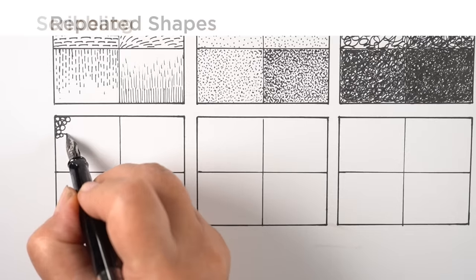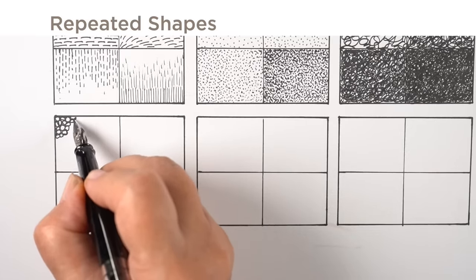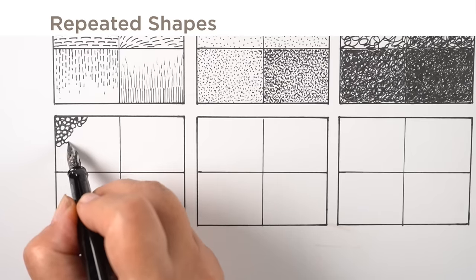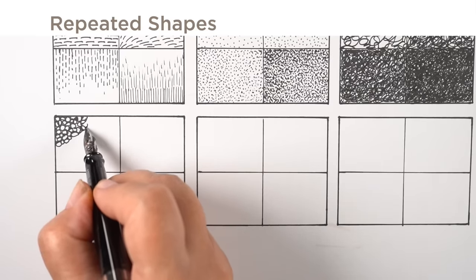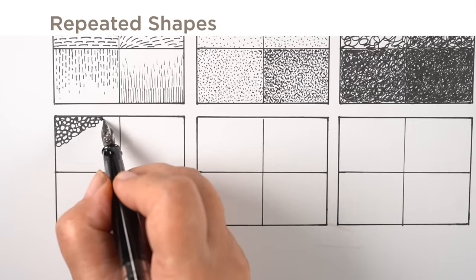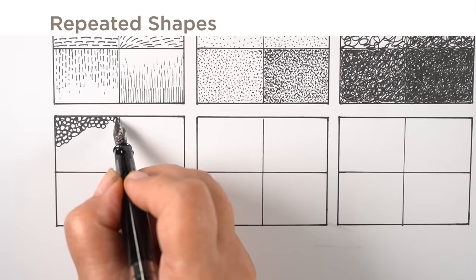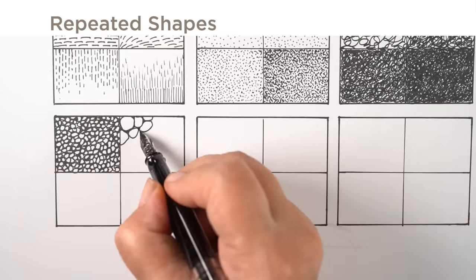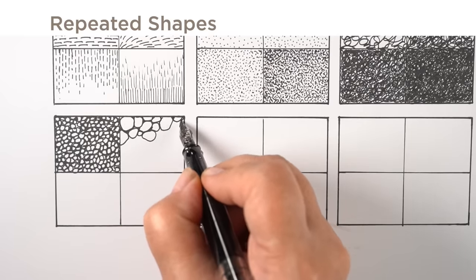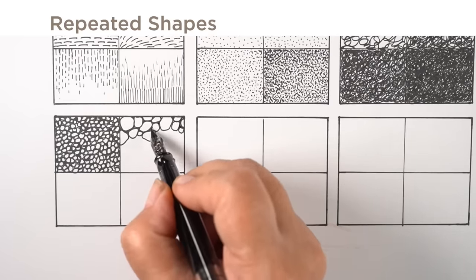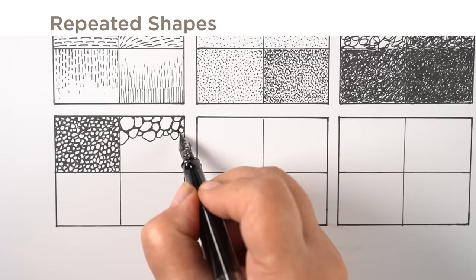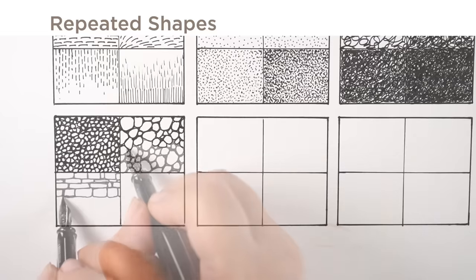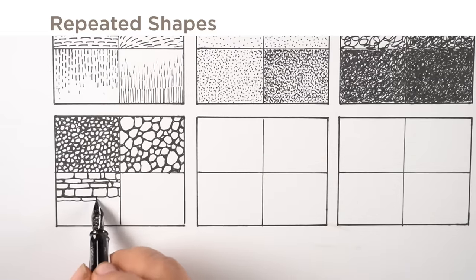And then there's repeated shapes. This can be any kind of shapes - I'm doing circles here. It could be squares, it could be triangles, it could be whatever suits what you are drawing, whatever kind of pattern you're trying to put in. Just creating a whole bunch of those different shapes makes for whatever kind of gray you're looking for. If you do small shapes and they're close together, it'll be darker because you have more ink on the paper.